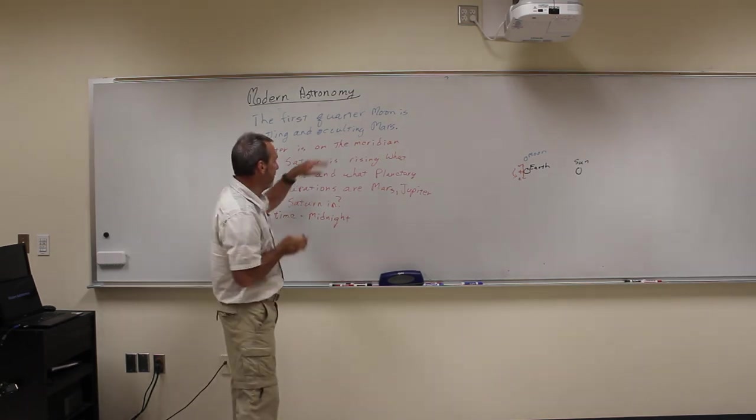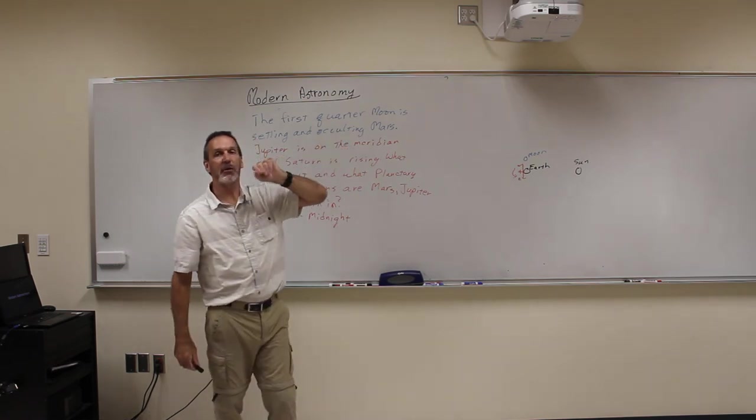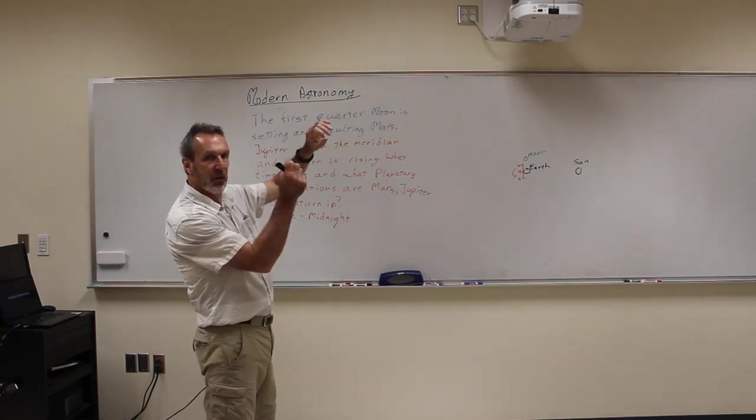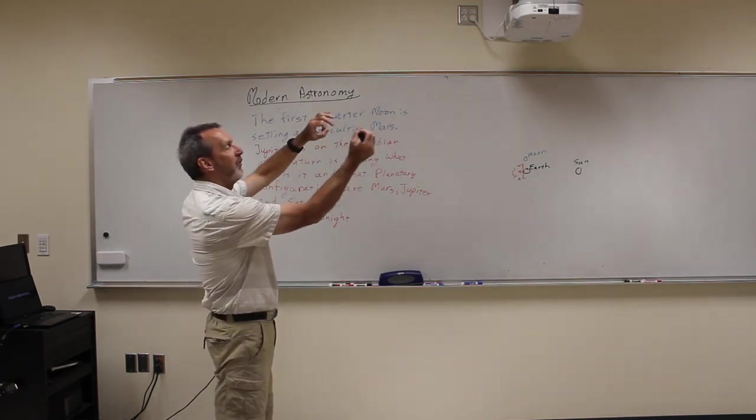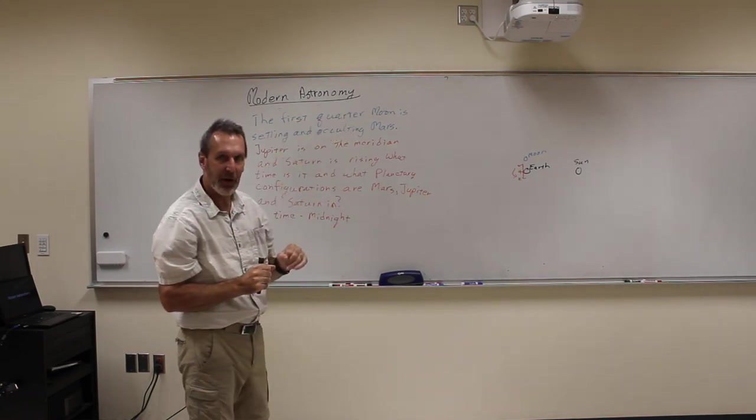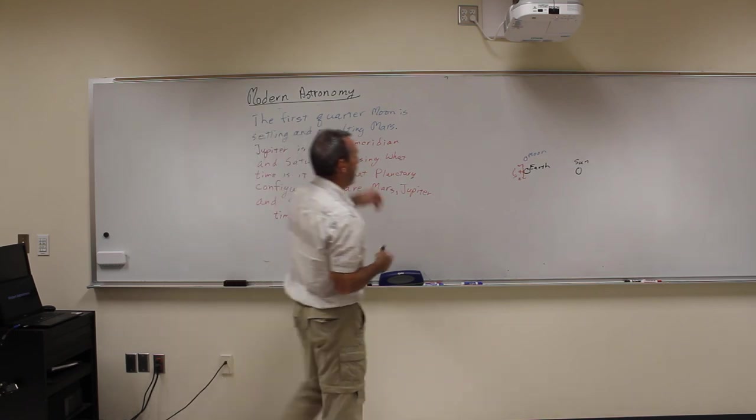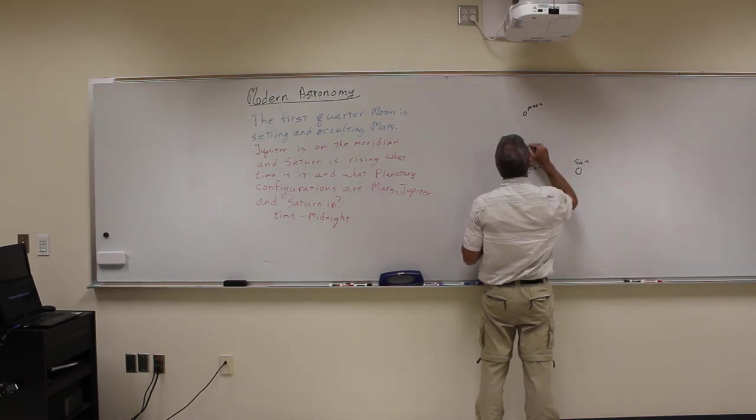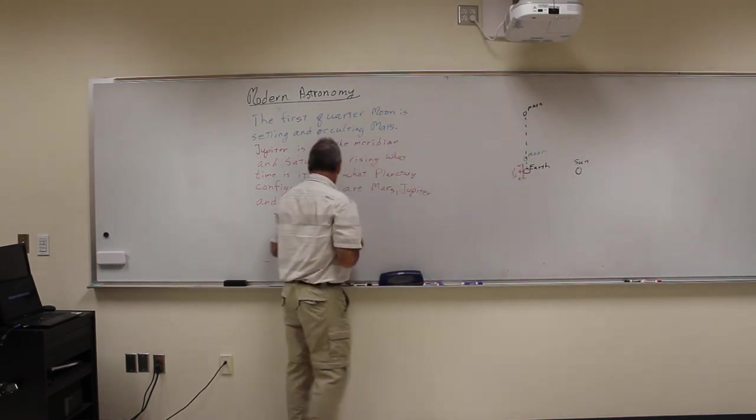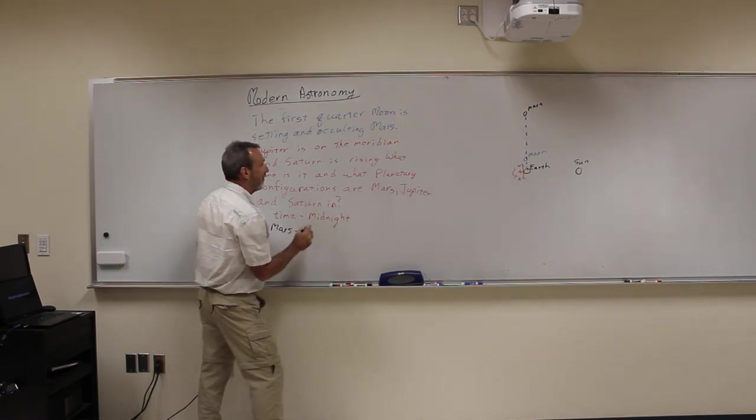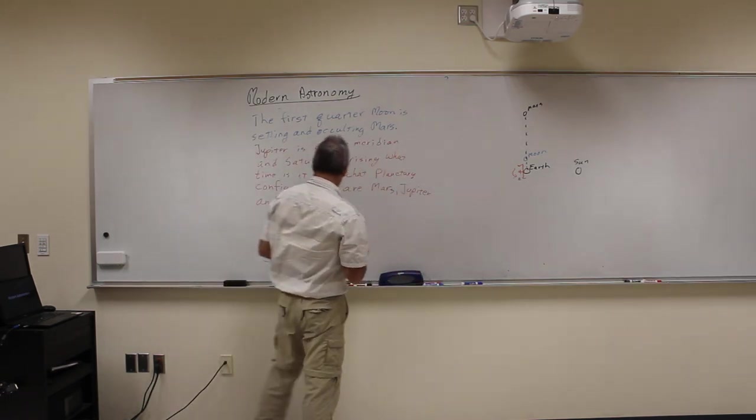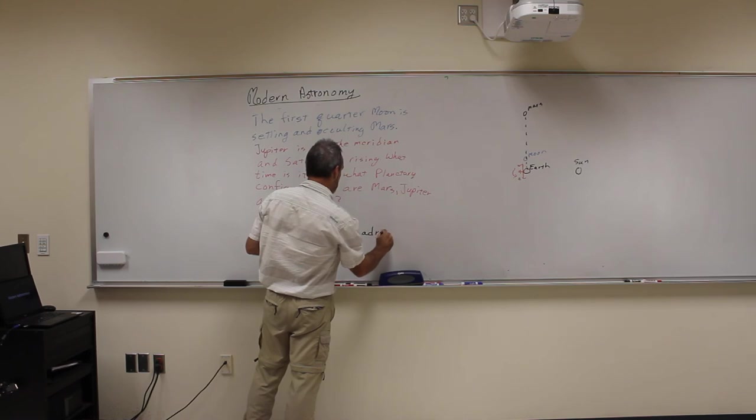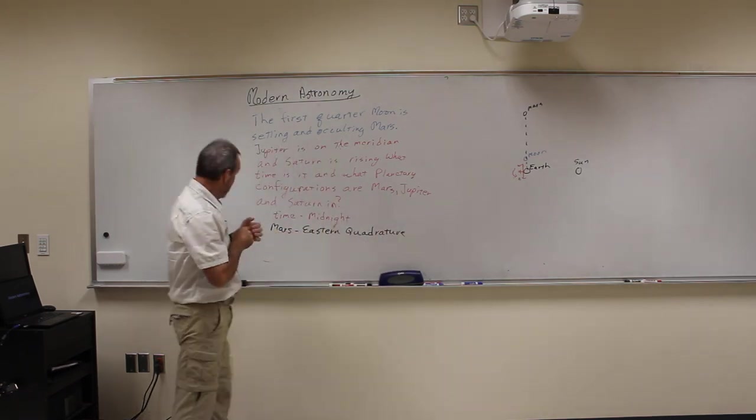Now, I haven't used this word occulting before. Occulting means it's passing in front of or blocking what's behind it. So what happens is since Moon is closer to us than planets, the Moon will go and pass in front of the planets and block them out for a while. That's called an occultation. So occulting means it's blocking it, which means Mars has to be right behind it. So up here would be Mars. It's in the exact same direction as the Moon. But we know from our diagram, if Mars is up there, it's got to be in eastern quadrature.